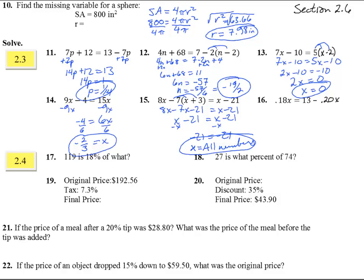Number 16. We've got to get these two x's together. I'm going to add this 0.20x on both sides. I get 0.38x equals 13. If I divide both sides by 0.38, I'm going to punch that one in my calculator. I get x equals 34.21.